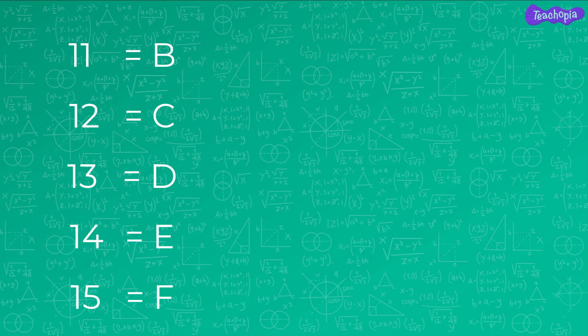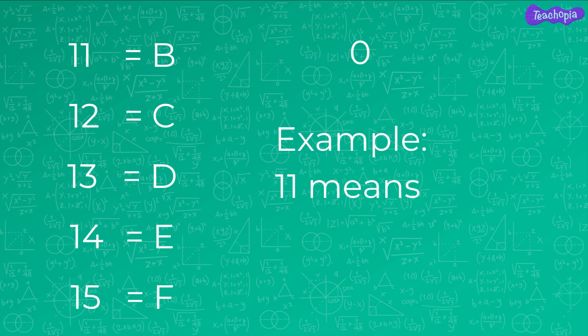If there are no hens or objects, we use the digit 0 to represent 0 hens. A hexadecimal number 11 means the digit 1 on the left represents one group of 16 objects and the digit 1 on the right means one object. Thus, in total, the hexadecimal number 11 represents a value of 17.